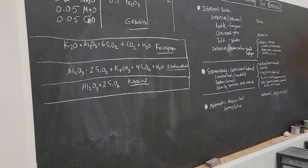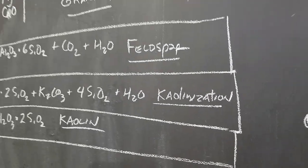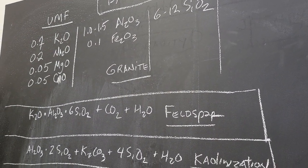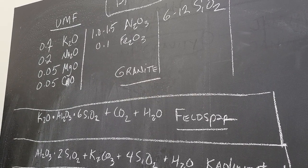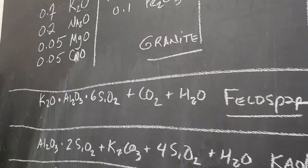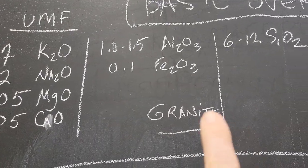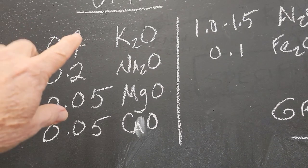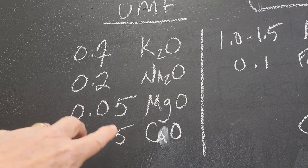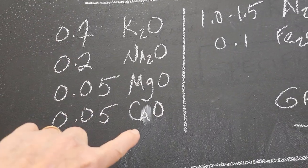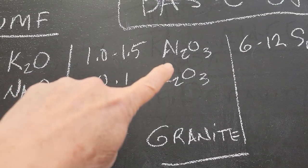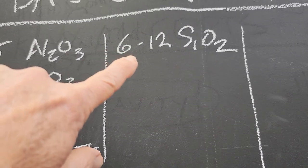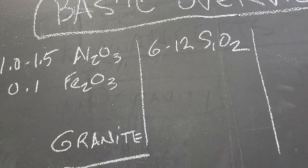This is part of the free online glaze course on this channel. We've gone through the Unity Molecular Formula for looking at what's in materials, and this is sort of an offshoot of that. Right here is granite represented in Unity Molecular Formula. This is our flux column — potassium, sodium, magnesium, calcium — those all add up to one. Then this is our refractory column, our stabilizer, alumina, and iron fits in that category. And then our glass former — there's quite a bit of silica, six to twelve moles.